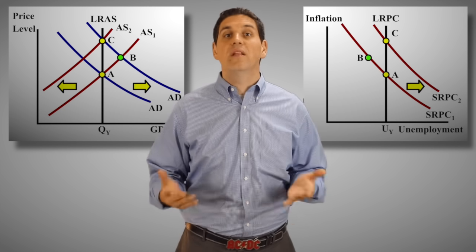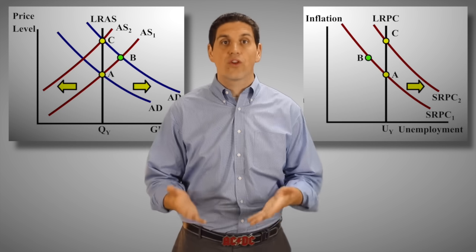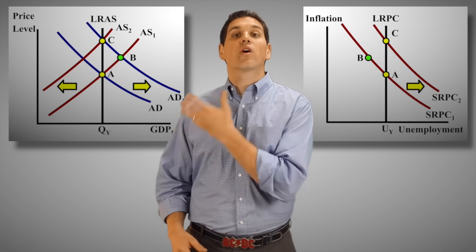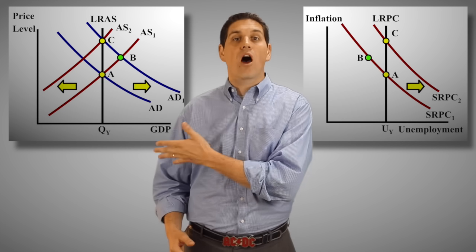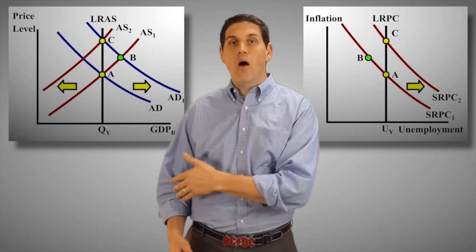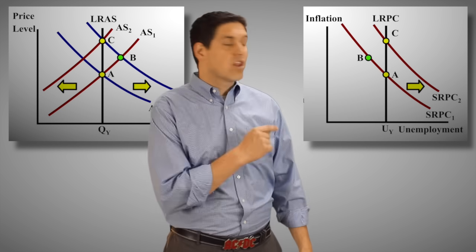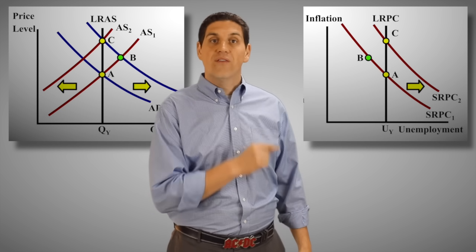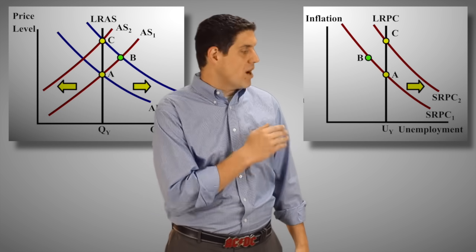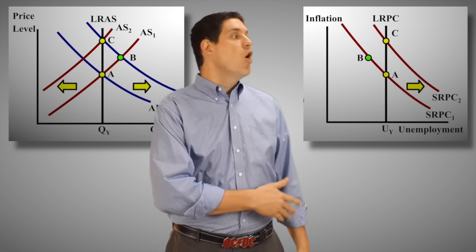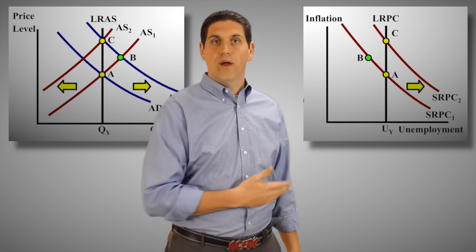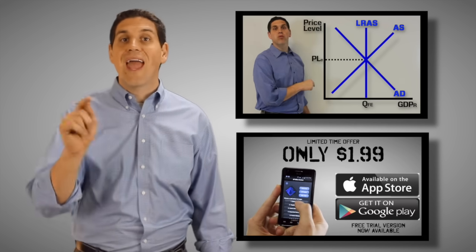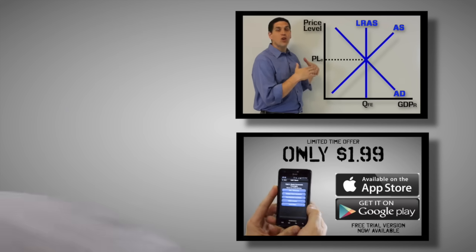Now, that completely explains why we have these two vertical lines. This line shows how much we're going to produce in our economy at full employment. And this vertical line shows the natural rate of unemployment — the amount of unemployment we're going to have when we're in the long run. Don't forget to check out my other videos and my review app. Till next time.